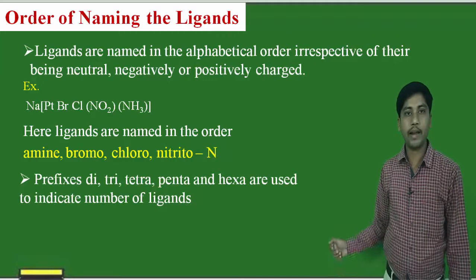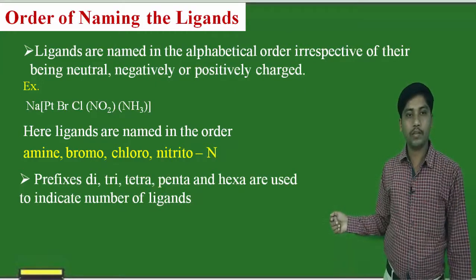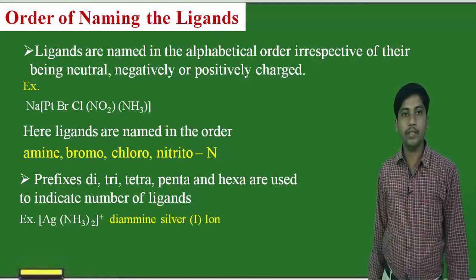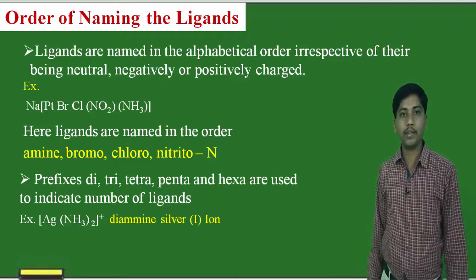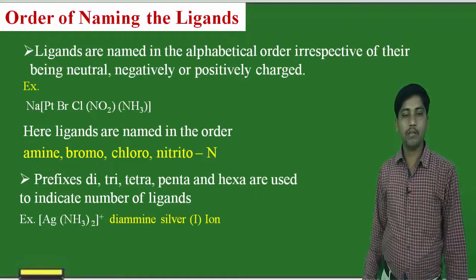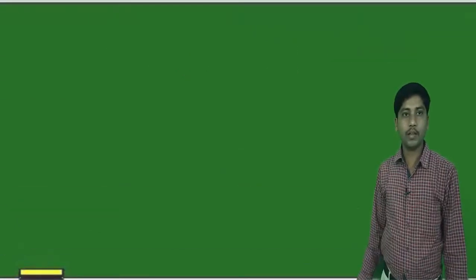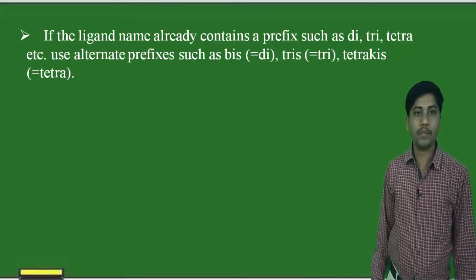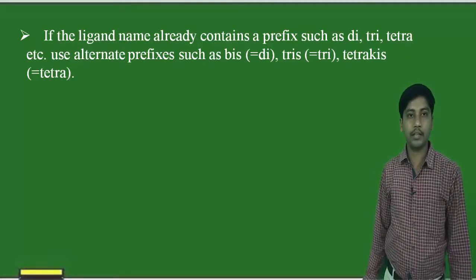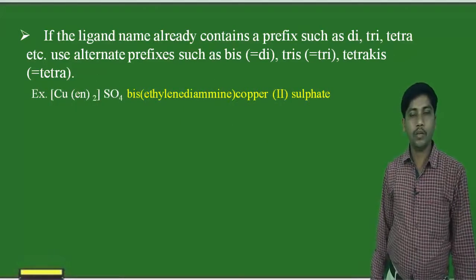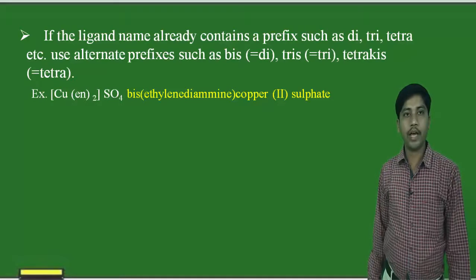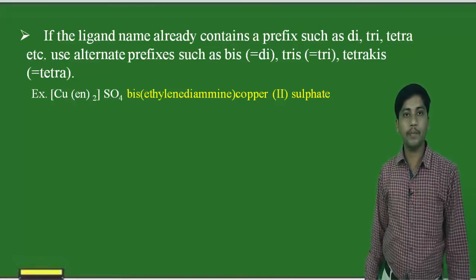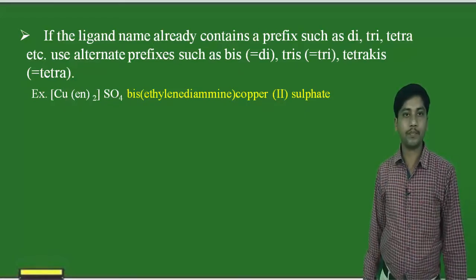Prefixes di, tri, tetra, hexa are used for ligands to indicate the number of ligands present in the complex. For example, [Ag(NH3)2]+: two NH3 ligands are present, so the name is diamminesilver. If the ligand's name already contains a prefix (like ethylenediamine), then we use Bis, Tris, Tetrakis instead. For example, [Cu(en)2]SO4 is named bis(ethylenediamine)copper(II) sulfate.